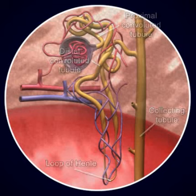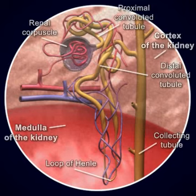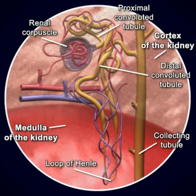Note that the renal corpuscle and the proximal and distal convoluted tubules are located in the cortex of the kidney. The medulla contains the loop of Henle and collecting tubules.